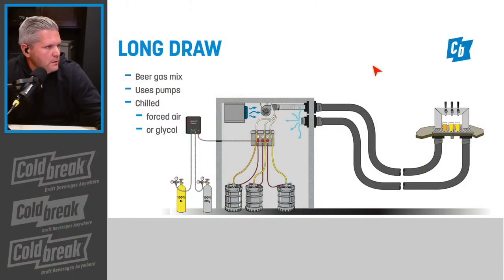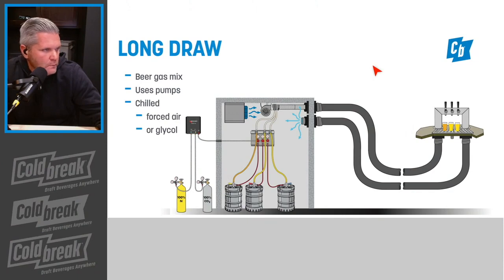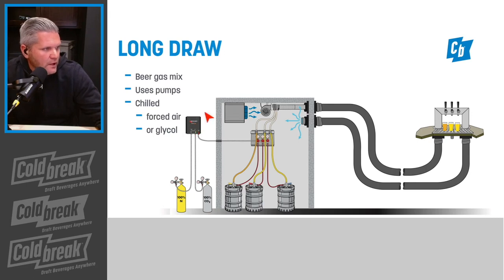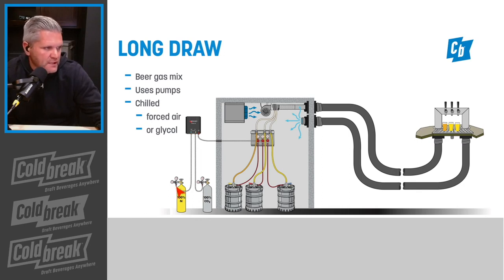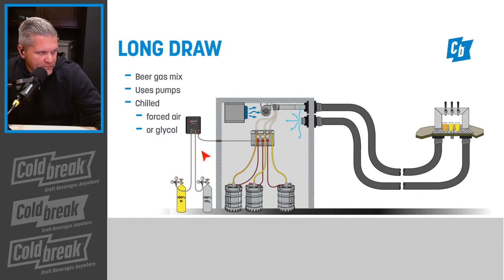You'll notice here in this long draw draft system they are using a mix of CO2 and nitrogen — this is what we call a gas mixer. So if you're pouring a beer that's like 60% CO2 and 40% nitrogen, what this will do is mix it for you, rather than having nitrogen and CO2 already combined into one tank.